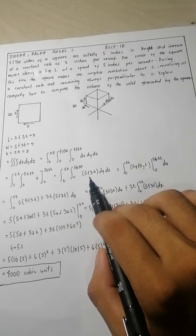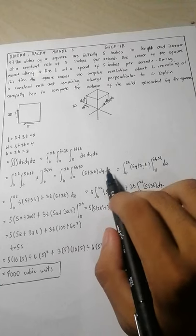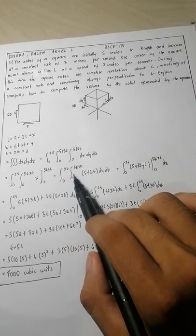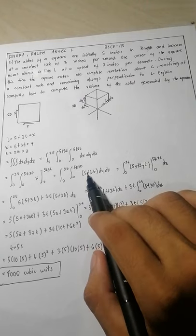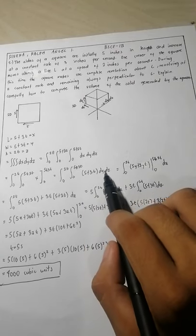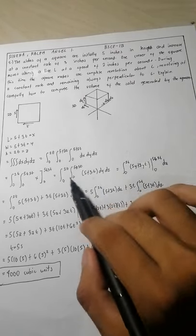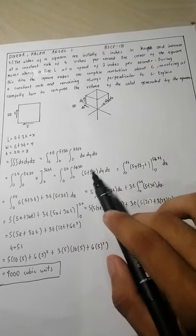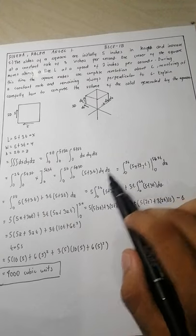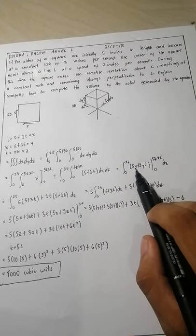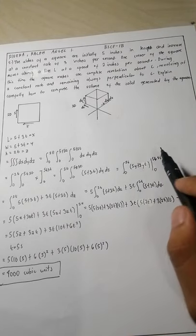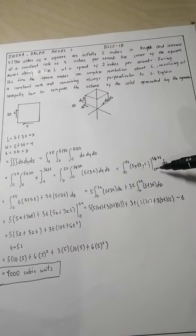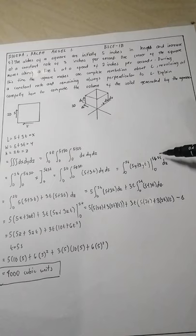So we have the integral of (5 plus 3t) dy dz, from 0 to 2t and from 0 to 5 plus 3t. The next integration is with respect to dy. The integral of (5 plus 3t) dy is equal to 5y plus 3yt, evaluated from 0 to 5 plus 3t.